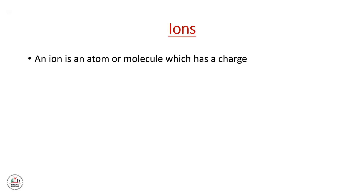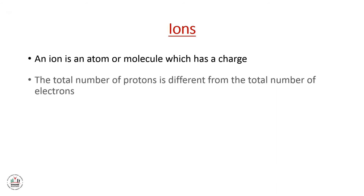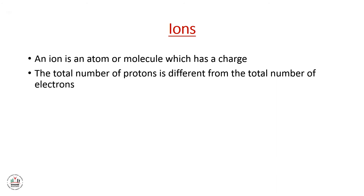Now we will move to the third type of matter — it's called ions. An ion is an atom or molecule which has a charge. In this type, the total number of protons is different from the total number of electrons, and that's why the ion is generated.